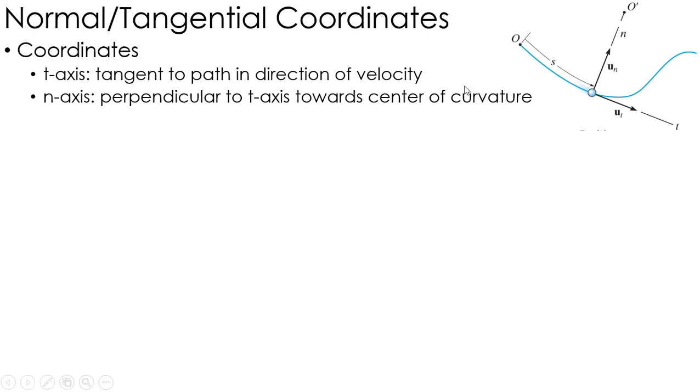If a particle is following a path, as shown here on the blue line, at any point on that path, the t axis can be defined as tangent, that's where the t comes from, tangent to the path in the direction that it's moving, in the direction of the velocity. The n axis is perpendicular to that t axis and pointed towards the center of curvature.